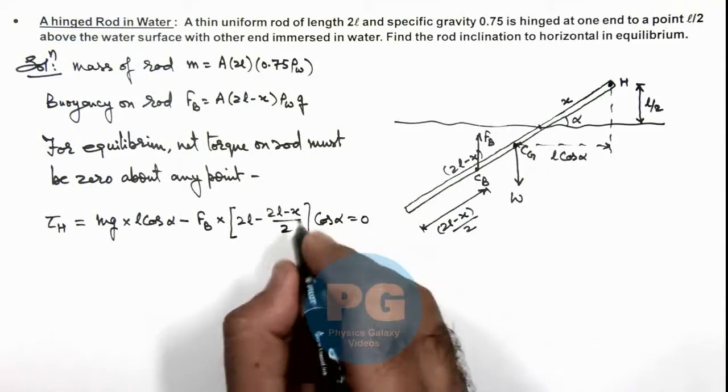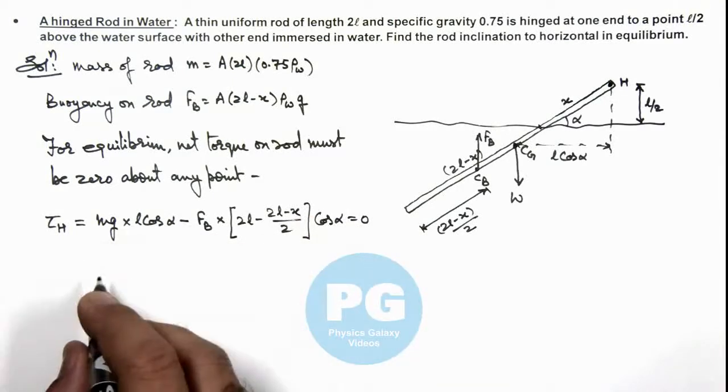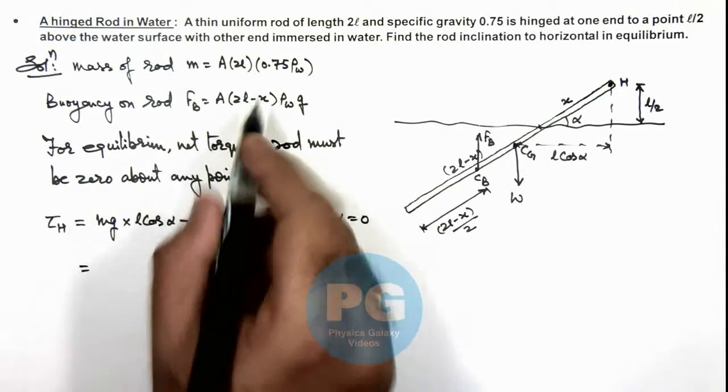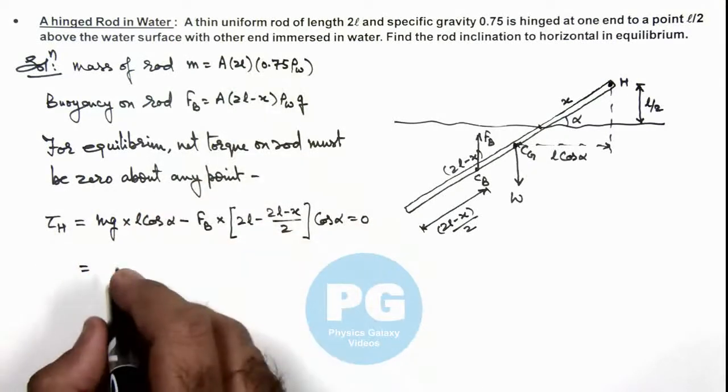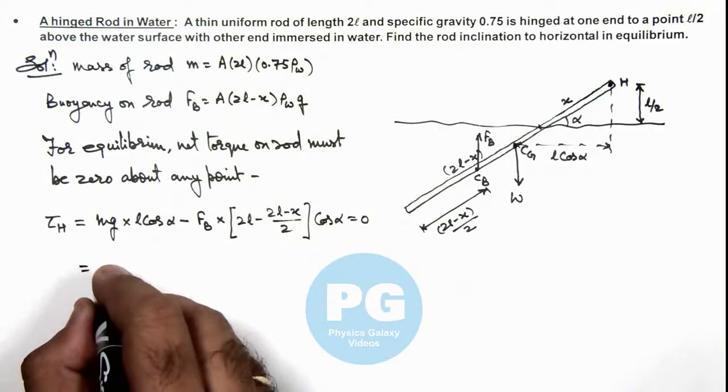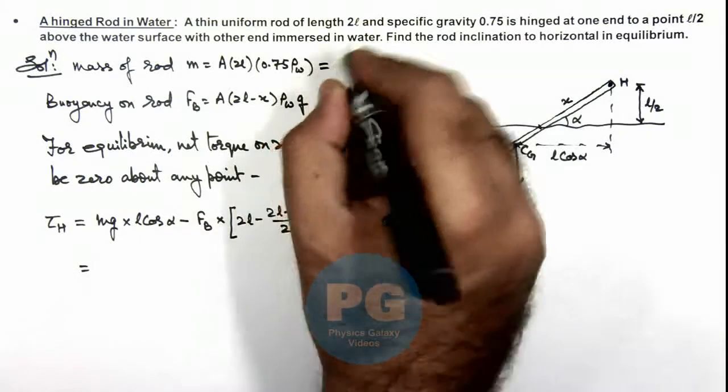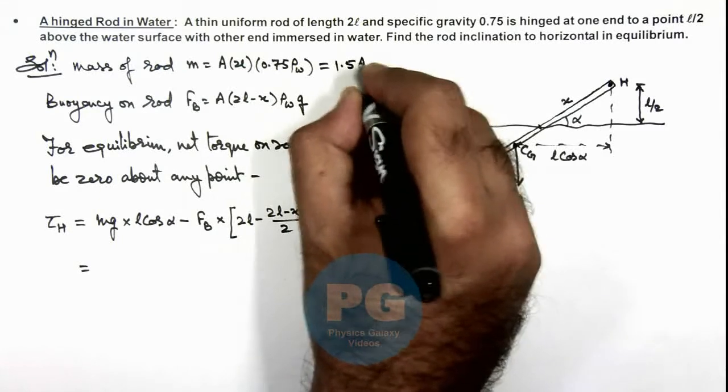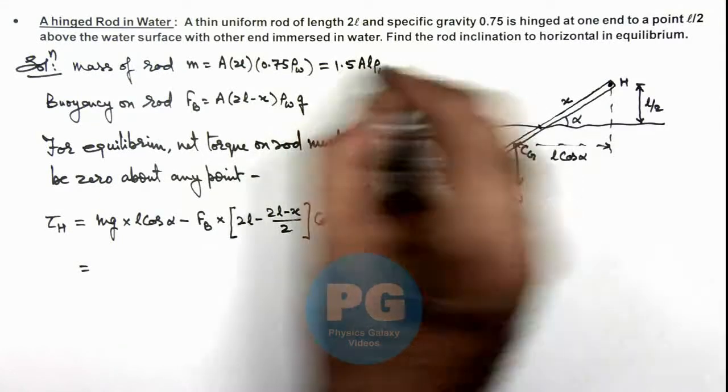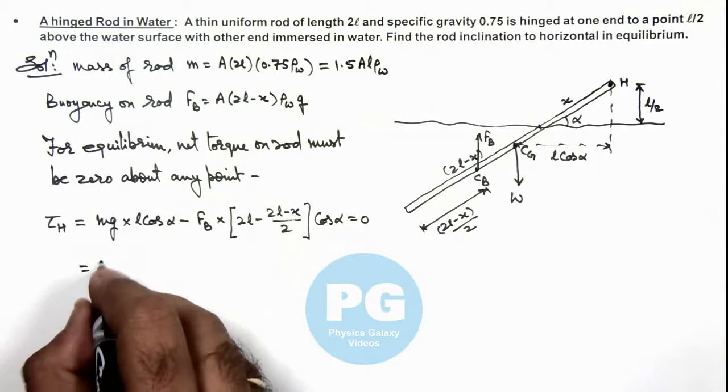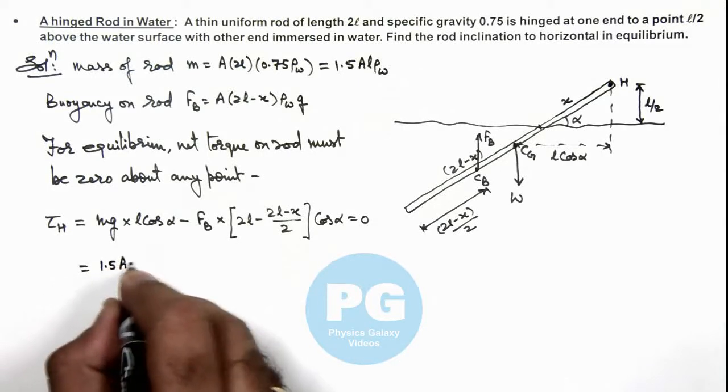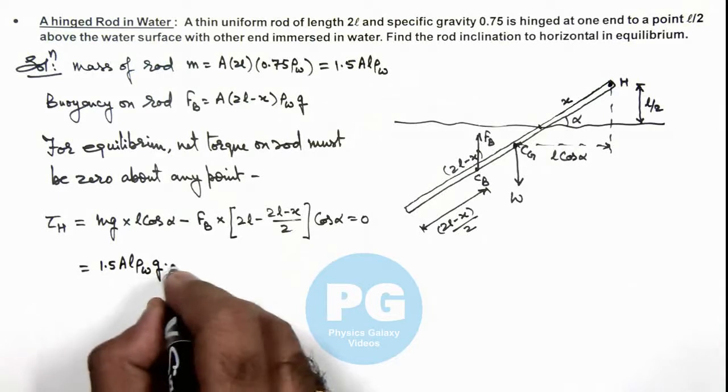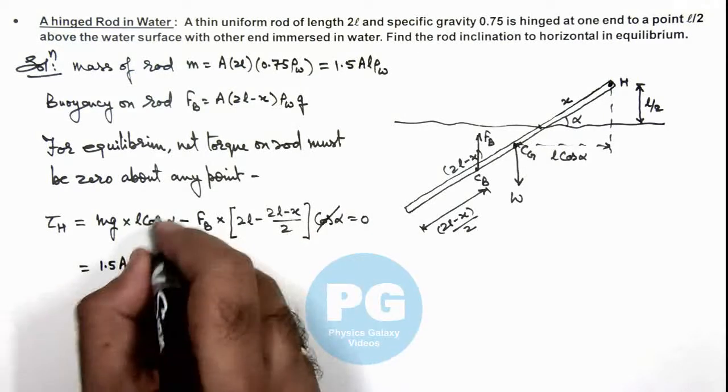Here cos α gets cancelled out, and the relation we are getting is, this mg we can substitute from here. So this will be 1.5 times A l ρ_w g multiplied by l. Minus this value, force of buoyancy is A times (2l minus x) multiplied by ρ_w g, multiplied by (2l plus x)/2.